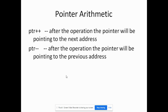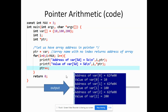Here's a code example. We declared an array with three elements: 10, 100, and 200. We declared a loop counter variable i and an integer pointer. We then assign the address of the first element of the array to the pointer. Note that an array name with no index returns the address of the first element. We have a loop from zero to i less than max, which is three — so indices zero to two.